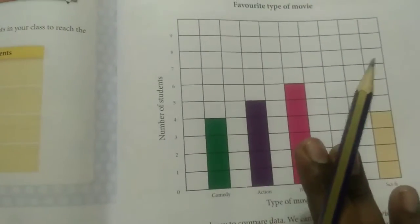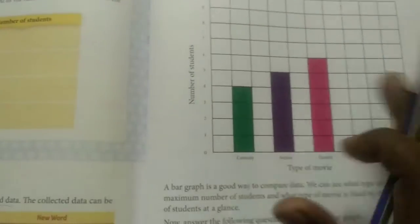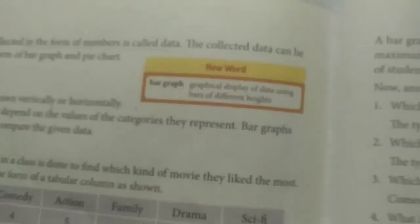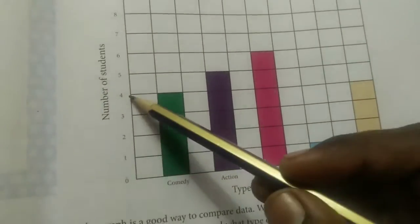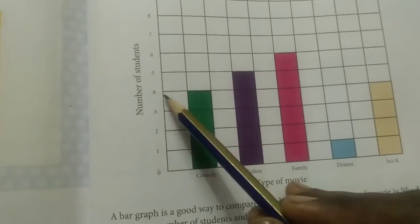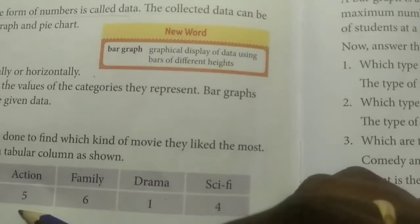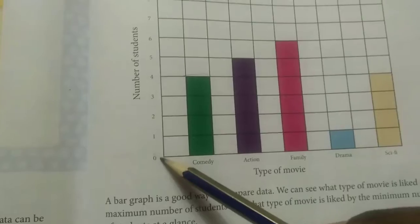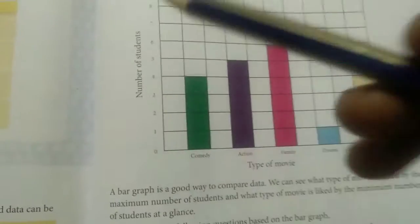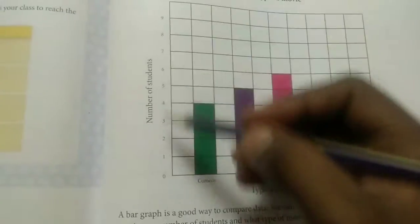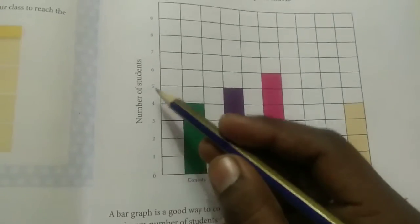Let's look at the bar graph. Here, the x-axis shows the type of movies — Comedy, Action, Family, Drama, Science and Fiction. The y-axis shows the number of students, with values 0, 1, 2, 3, 4, 5, 6, 7, 8, and 9. This is how the axes are set up for our bar graph.